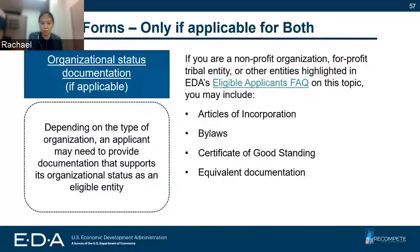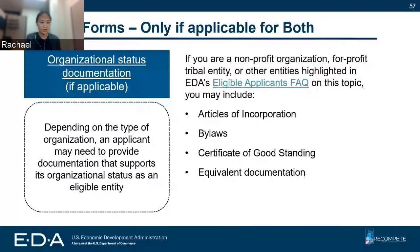Depending on the type of organization applying — applicable to both recompete plan and strategy development applicants — we may require documentation of your organizational status. For some applicant types you may not need to provide documentation; for others you may. If you are a nonprofit organization, a for-profit tribal entity, or other entity types listed on our eligible applicants FAQ, we encourage you to include: your articles of incorporation, bylaws, certificate of good standing, or equivalent documentation. It's not strictly required when you apply, but we will need them to eventually confirm the status of your organization.